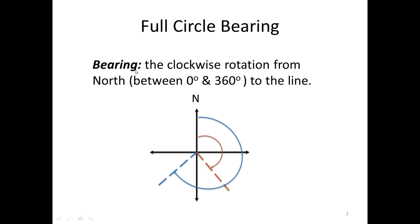When we look at the term bearing, it is the clockwise rotation from north to the line. The bearing has to be between 0 and 360 degrees. If it is outside of that range, 360 degrees has to be added or subtracted from it. When we look at this red line right here, we can see that the angle here is from north to that line. That is considered to be the bearing of that red line.